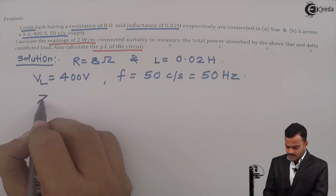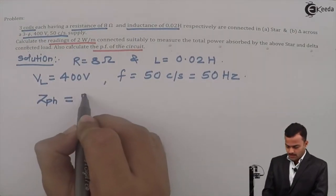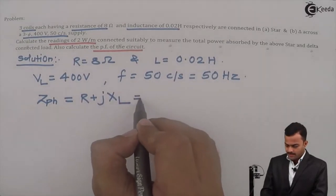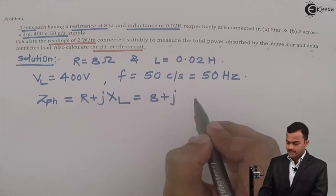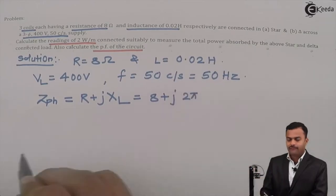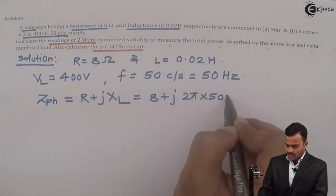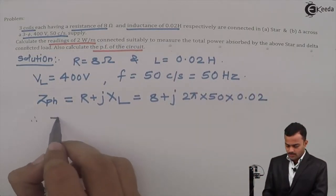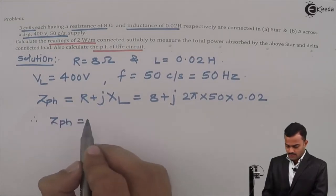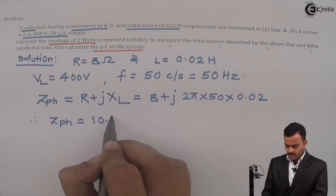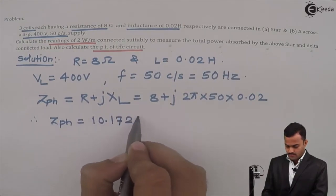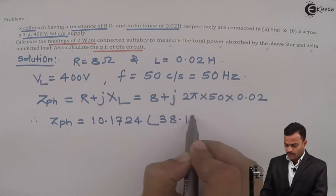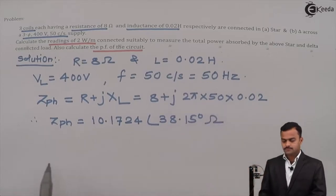Let's solve. First, calculate the value of Zph, which is R plus jXL. R is 8 plus j times 2π times f times L, where f is 50 and L is 0.02. So if you solve, you will get Zph equal to 10.1724 at an angle of 38.15 degrees ohm.